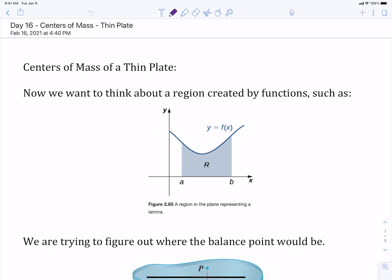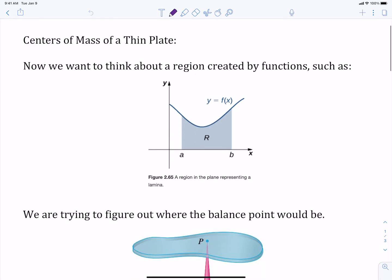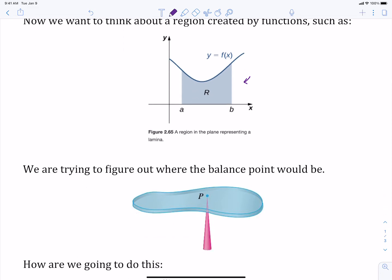So we're going to look at this with regions that we can create with functions. For example, here's a picture that I stole from OpenStax, that we've got this region here and we want to figure out how we balance it. We've got this region and we've got this plate that it's basically very thin, so it's almost that it's two-dimensional, but we want to figure out where's that balance point that if we wanted to put a pole underneath it or balance it on the tip of our finger, where would that point need to be for this region that we have?